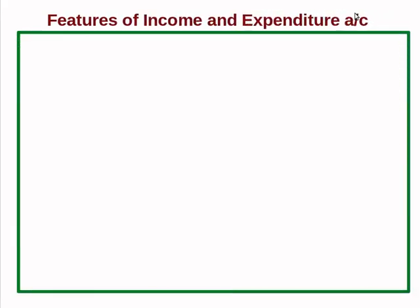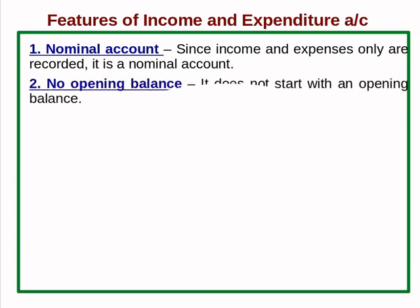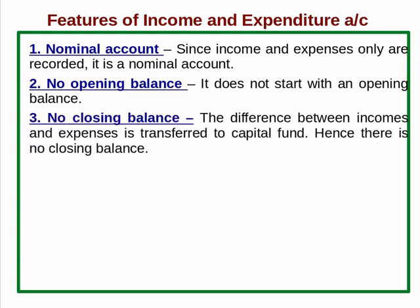Features of income and expenditure account. First of all, it is a nominal account — since only incomes and expenses are recorded, it is a nominal account. Second, no opening balance — it does not start with an opening balance. In a receipt and payment account, we start with an opening balance, but the income and expenditure account does not carry an opening balance.